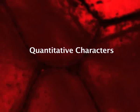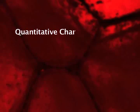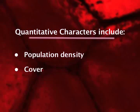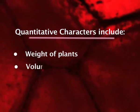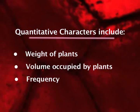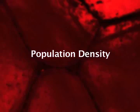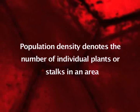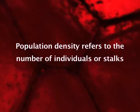Now, after qualitative characters, let us talk about quantitative characters. These include: A. Population density, that is, number of individuals or abundance per unit area; B. Cover; C. Height of plants; D. Weight of plants; E. Volume occupied by plants; and F. Frequency. First, population density. Population density denotes the number of individual plants or stocks in an area, but in a strict sense it refers to the number of individuals or stocks in a unit of space.